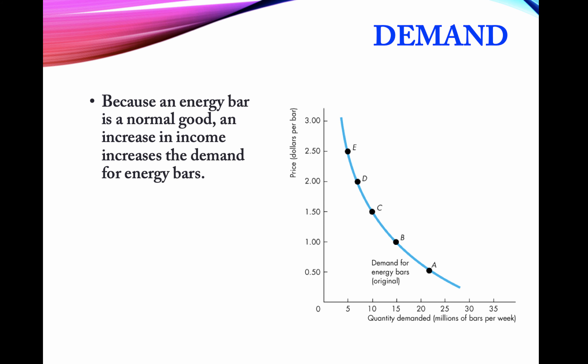Let's go back to our initial example for energy bars. This is the market demand graph. Suppose there is an increase in income. At a price of $3, the demand is roughly 5 million bars. As the price decreases, quantity demanded increases as more and more people enter the market and start purchasing the goods.